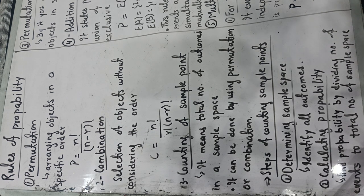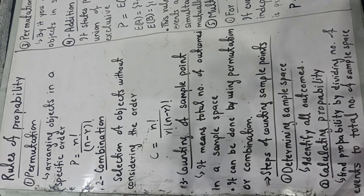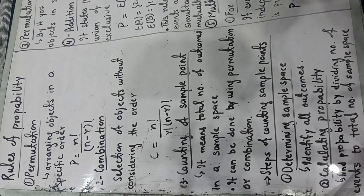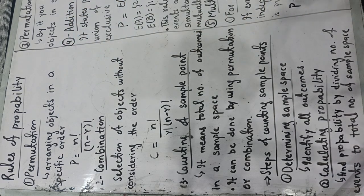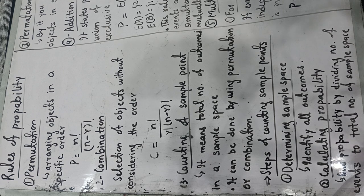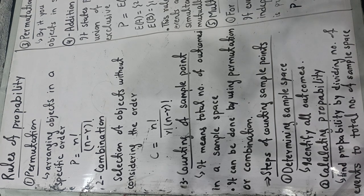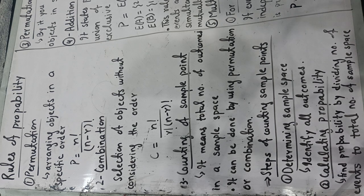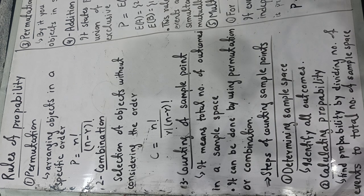The total rules of probability are five rules. The first rule of probability is the permutation. We have solved the whole chapter number 7 about it. Permutation is arranging the objects in a specific order. The formula is P equals n factorial over n minus r factorial. We have solved a lot of questions about that formula.